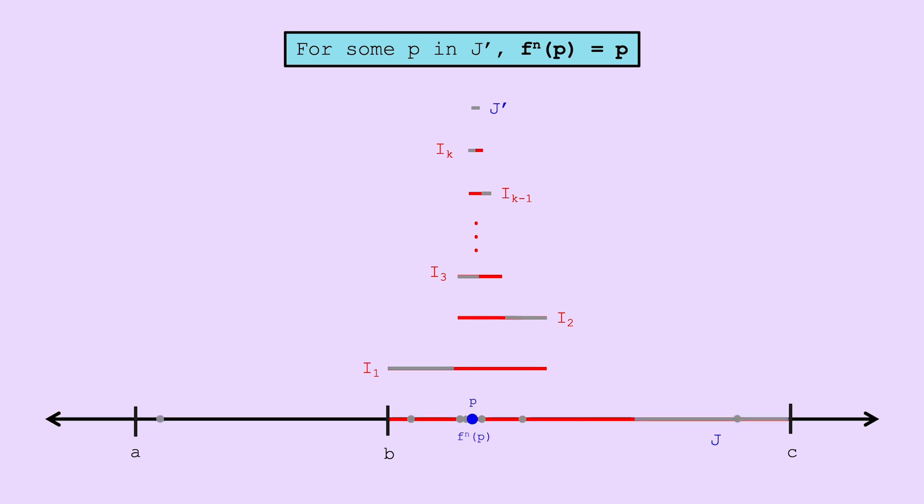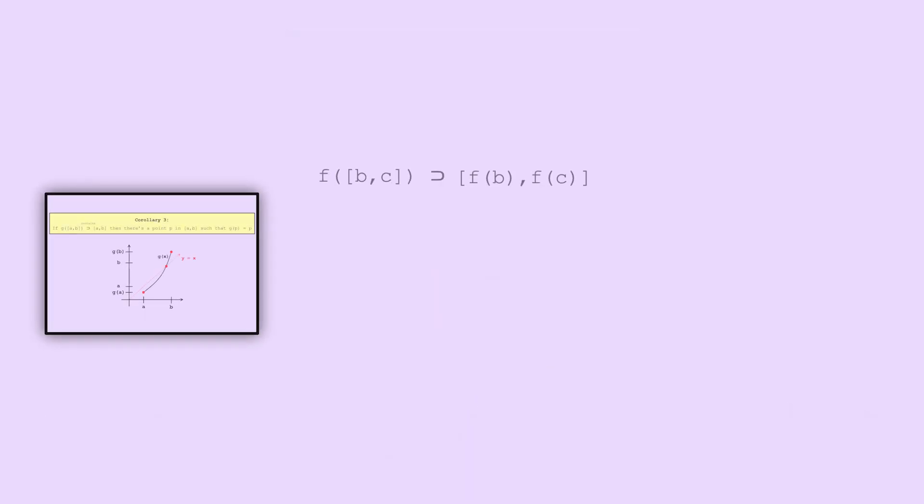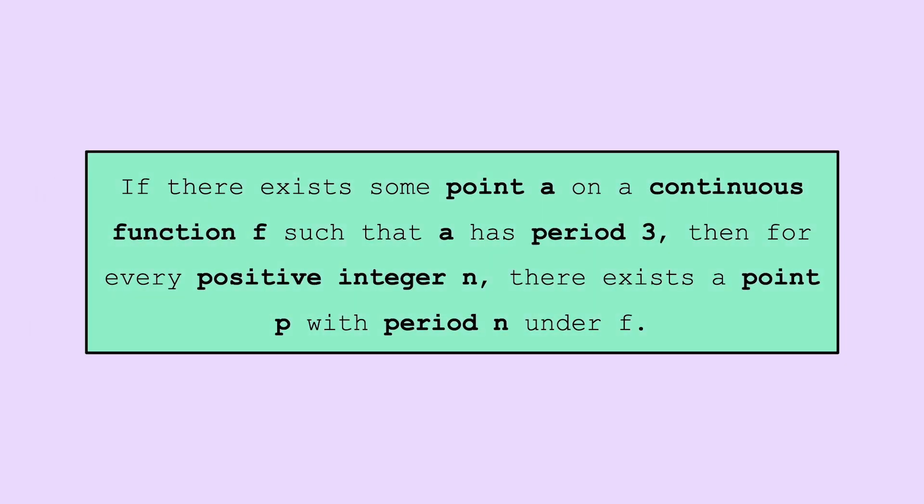We're so close, the only detail left to sort out is to show there's a point with period 1, since n is at least 2. However, by our third corollary, because f of the interval bc contains itself, there must be a point p in bc, so that f of p is equal to p. But with this out of the way, we've indeed proven that if there's a point with period 3, then there's a point with every possible period.